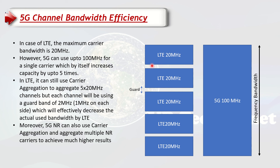On the 5G side, all 100 megahertz is a single channel, so there is no guard band wastage — maybe a couple of resource blocks on both sides at the edges, but overall the channel efficiency based on bandwidth is much higher because it is one continuous channel.